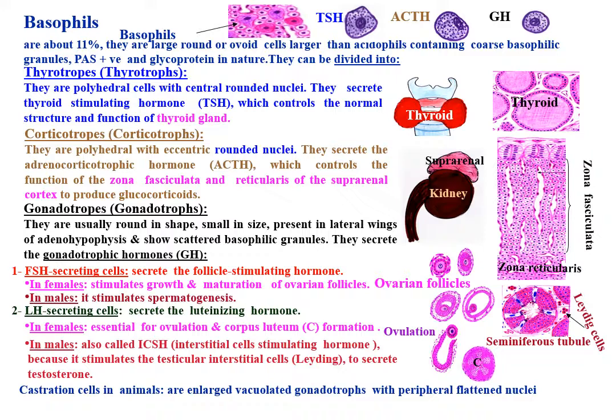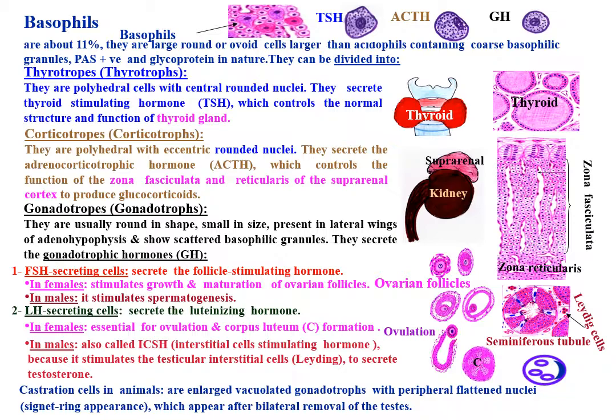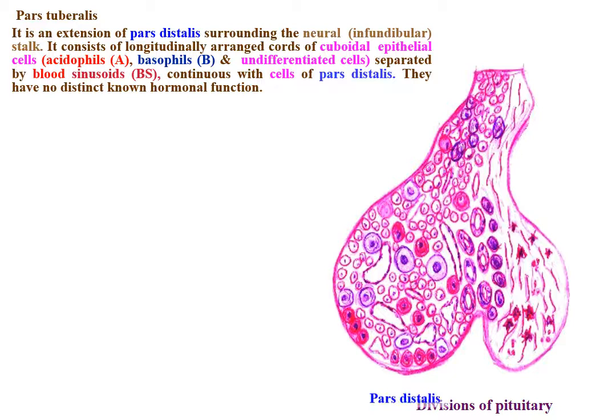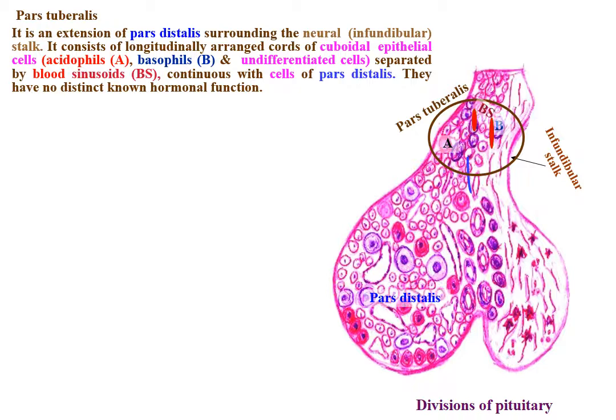Castration cells in animals are enlarged, vacuolated gonadotrophs with peripheral flattened nuclei and signet-ring appearance, which appear after bilateral removal of the testis. Pars tuberalis is an extension of pars distalis surrounding the neural stalk, infundibular stalk. It consists of longitudinally arranged cores of cuboidal epithelial cells — acidophils, basophils, and undifferentiated cells — separated by blood sinusoids, continuous with the cells of the pars distalis. They have no distinct hormonal function.